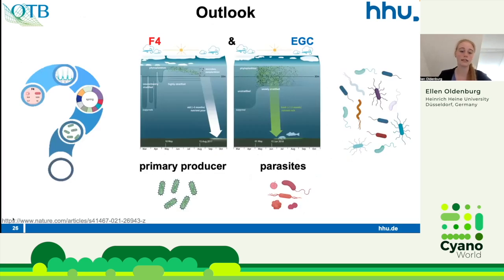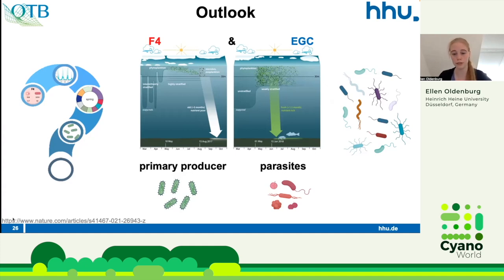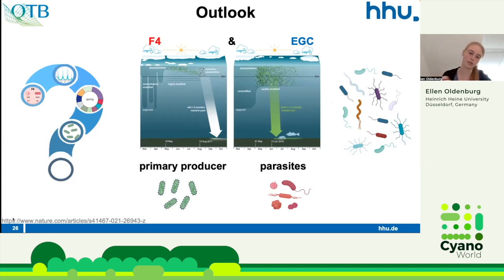In the future, I would like to use all this information to create simplified models that can depict the different locations and describe the dynamics of my communities — for example, using nutrient-dependent primary producers and parasites from the network to create models similar to Lotka-Volterra. If this works, the model could be applied to my Arctic expedition data and perhaps show the impact of changes in climate conditions.